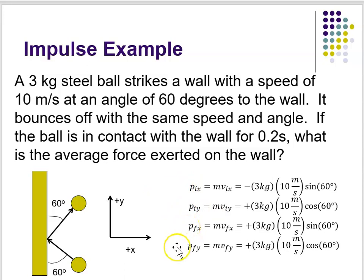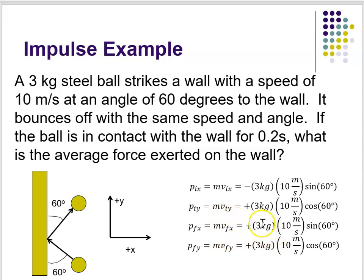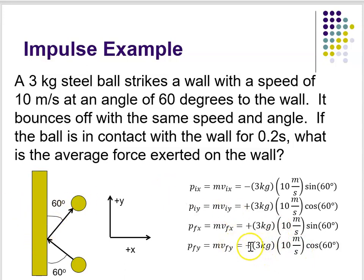Now let's look at the final momentum. For the x component: this time my ball is traveling up and to the right, so that's in both the plus x and plus y directions. My x component is three kilograms times 10 meters per second times the sine of 60 degrees, because the x component is opposite this 60 degree angle. For the y component: three kilograms times 10 meters per second times the cosine of 60. Since it's traveling upward and I've chosen up as plus y, it's positive. So that's all my momenta.